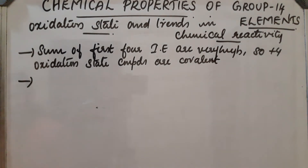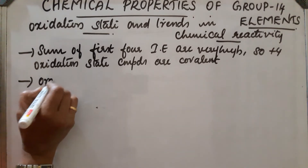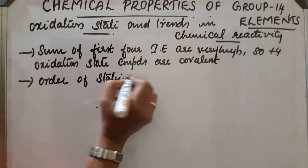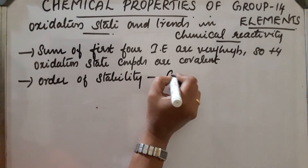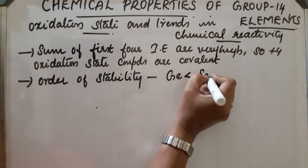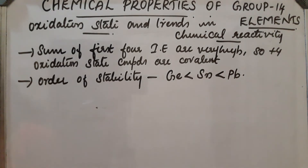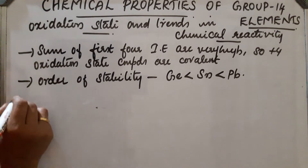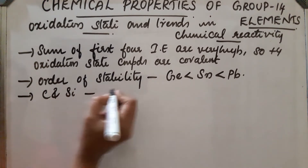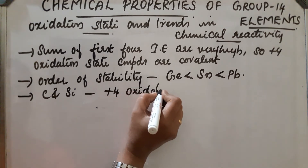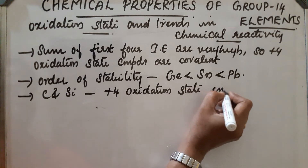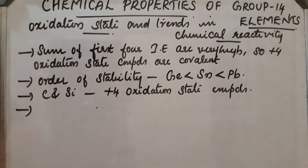For heavier elements down the group, the plus 2 oxidation state is more stable. In terms of order of stability, germanium is less stable in the plus 2 state than tin. Carbon and silicon predominantly form plus 4 compounds. In the case of germanium, they form both plus 4 and plus 2 oxidation states, but plus 4 is more stable.